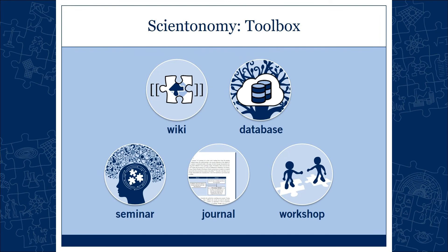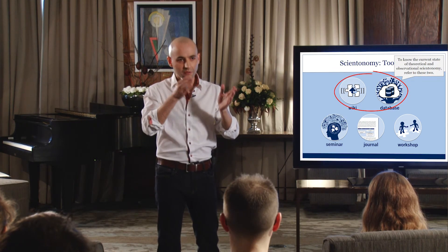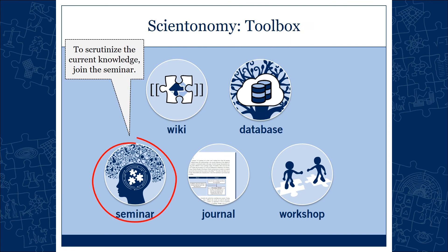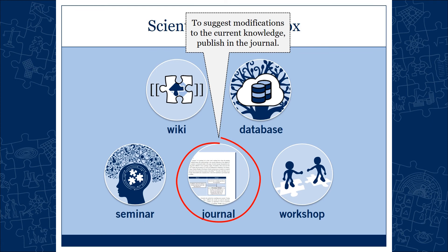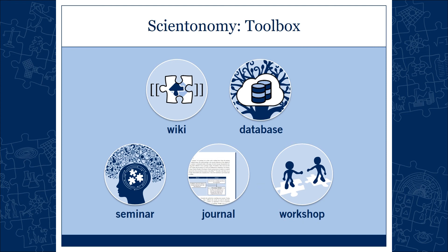To recap the toolbox: we need the database and the wiki to know the current state of theoretical and observational scientonomy — the theory and the tree of knowledge. We need the seminar to scrutinize the current state of knowledge. We need the journal to suggest modifications to current knowledge. And finally, we need the workshop to resolve contentious issues. This is the point of the toolbox.